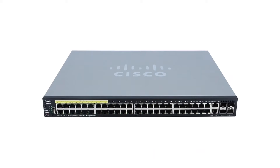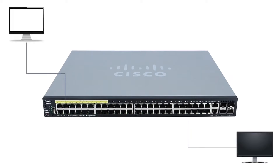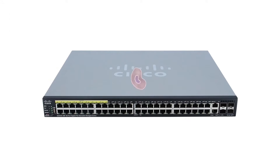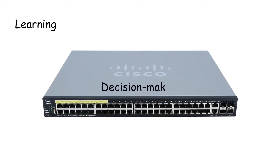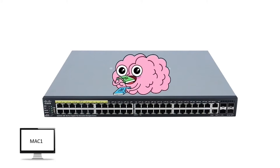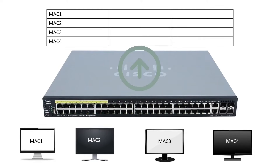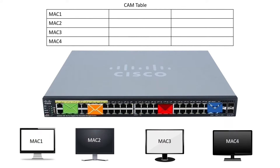A switch has many ports and forwards an incoming frame only from the port connected to the destination device. We can divide this process into three phases: learning, decision making, and forwarding. In the learning phase, a switch learns the addresses of all connected devices and saves them into a table known as the CAM table. It uses incoming frames to learn the addresses.